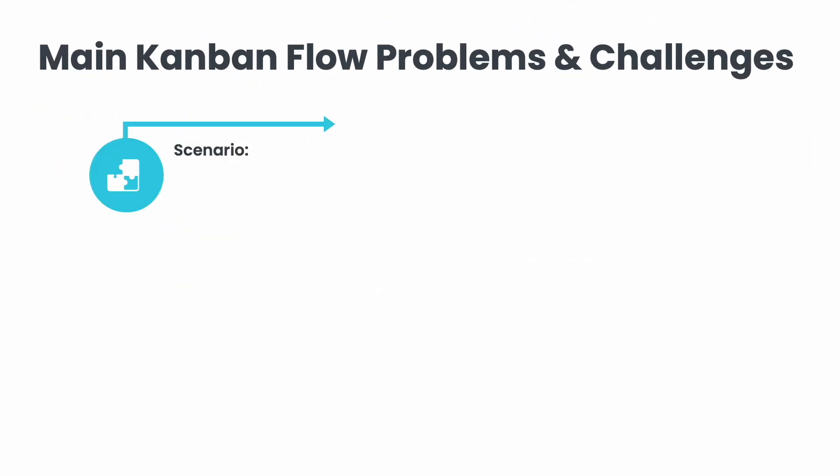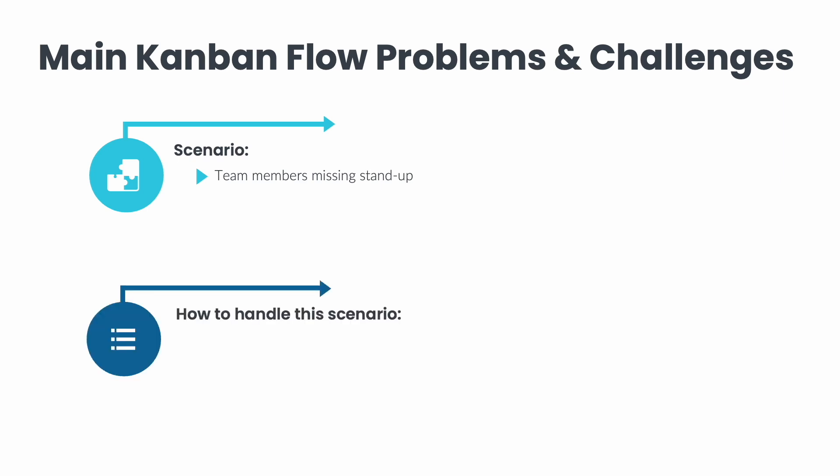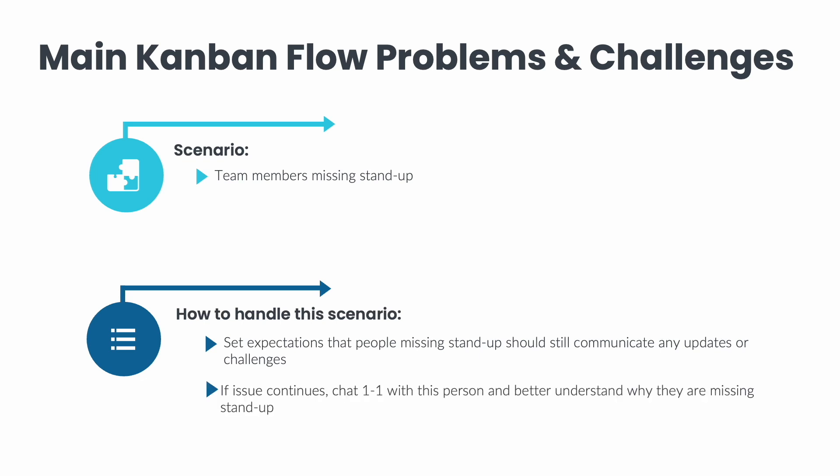Another Kanban challenge is when team members miss stand-up. If this happens from time to time, you should set expectations that people missing stand-up should still communicate any updates or challenges. In a remote environment, this can be done by instant messaging or email. Even though they missed stand-up, they should still update their cards on the Kanban board. If this happens consistently with a specific person, you should chat one-on-one with them to better understand why they are missing stand-up. They might have a good reason — try to work with them on a solution.